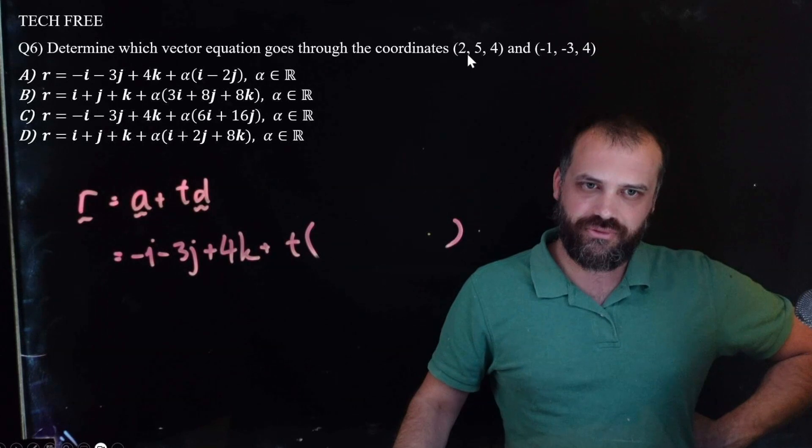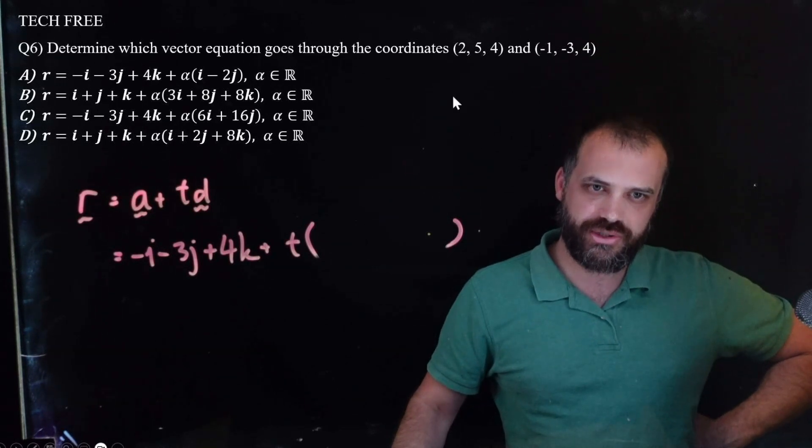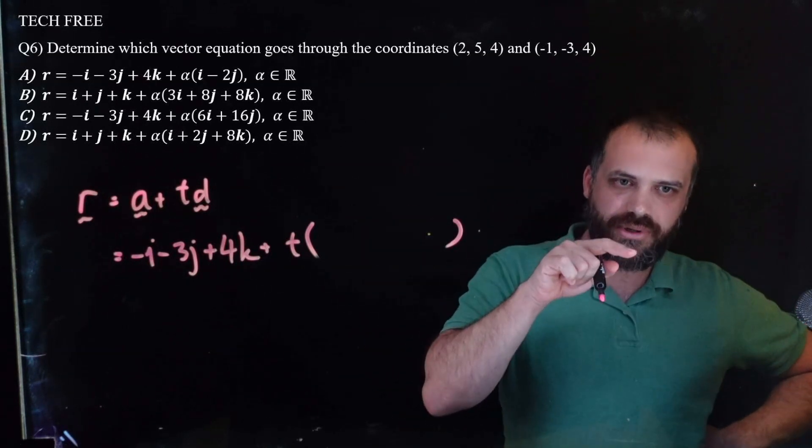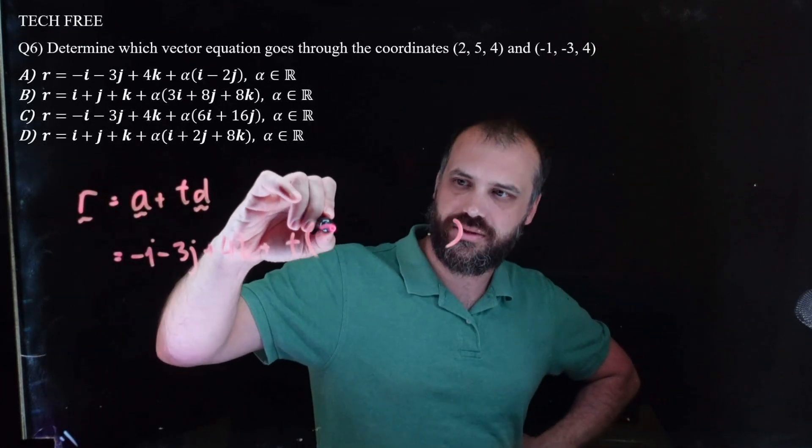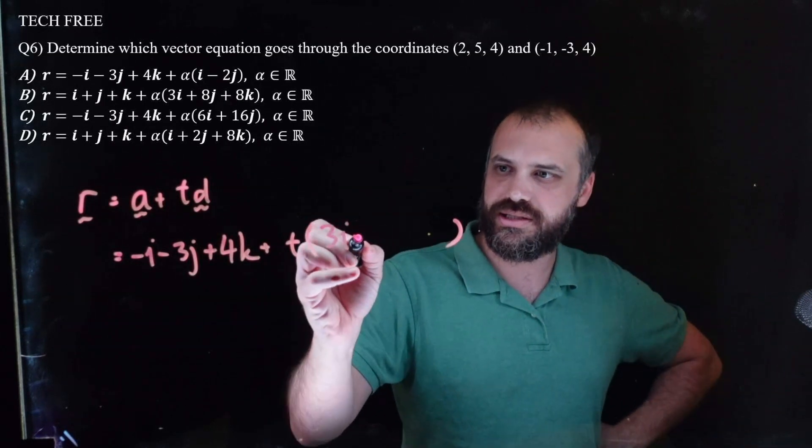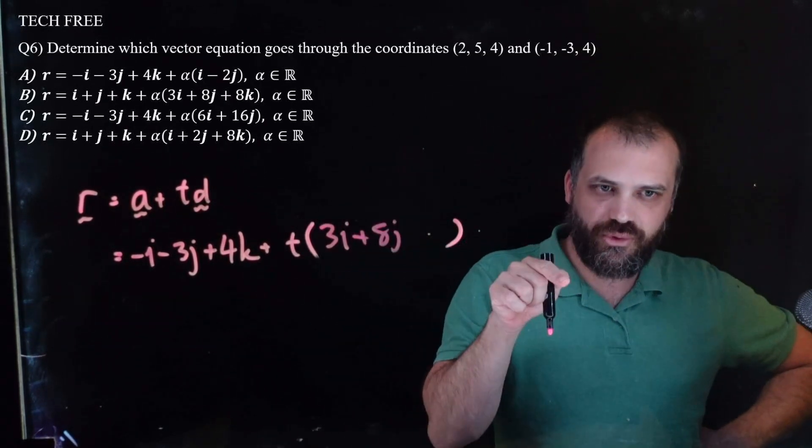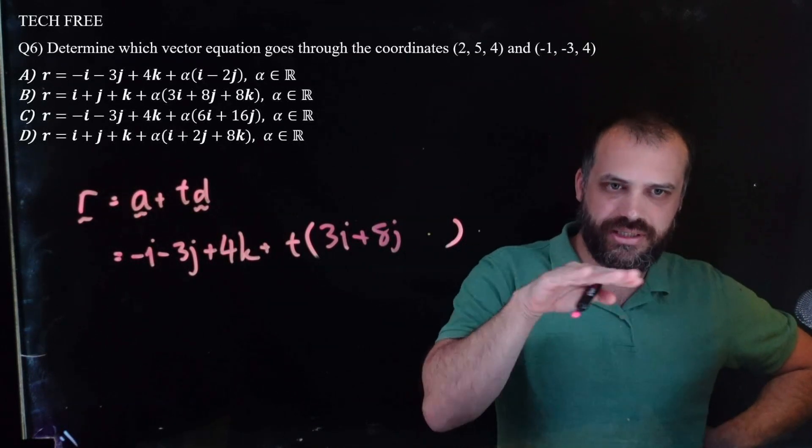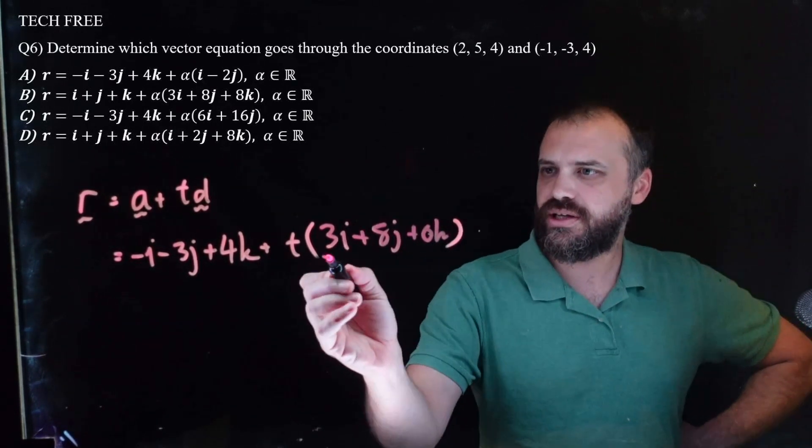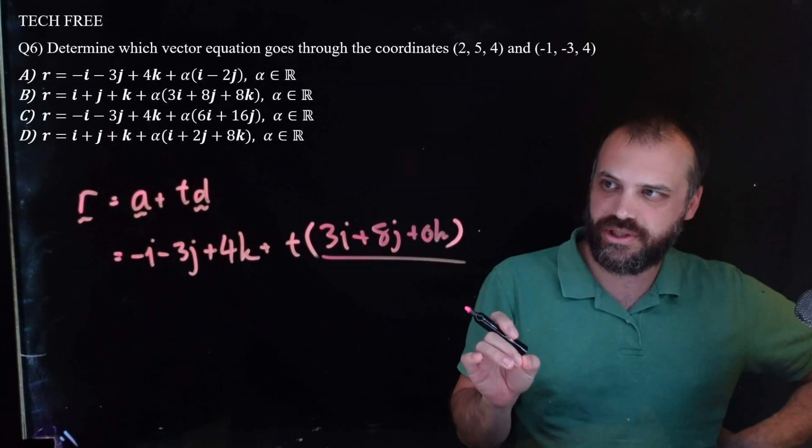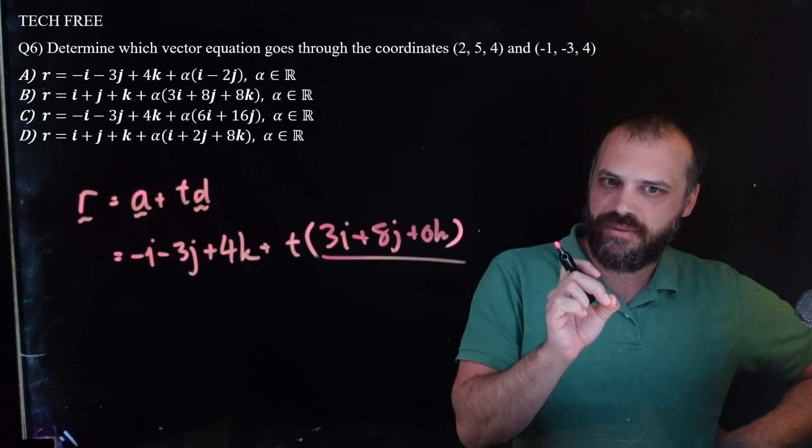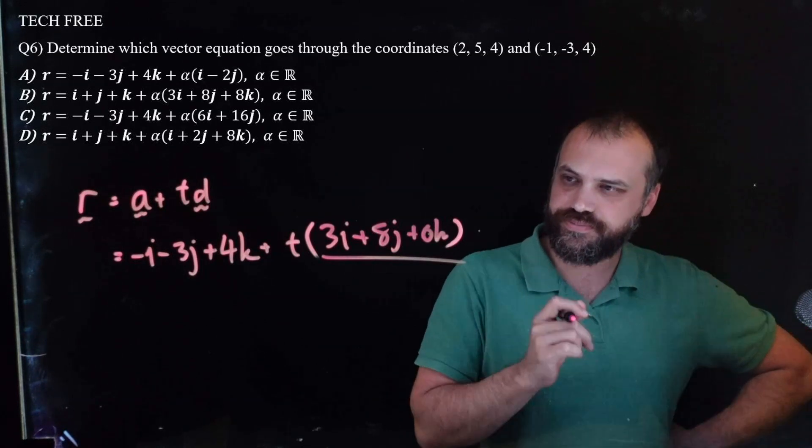Alright, and then we need some sort of direction. The direction is going to be the difference between the two vectors. So I'm going to just, it could be either one, right? It could be from like 2 minus 1 or it could be minus 1 minus 2. I'm going to go that way. Alright, so 2 minus minus 1 is 3. 5 minus minus 3 is 8. And 4 minus 4 is 0, 0.